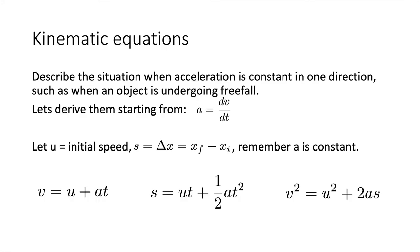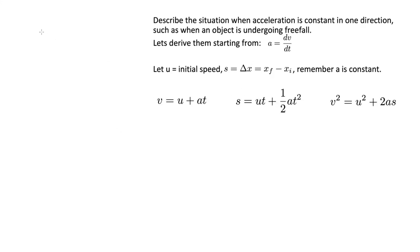The kinematic equations describe situations when the acceleration is constant in one direction, such as during freefall. We'll derive them starting from a = dv/dt. We let u stand for the initial velocity (v at t = 0), s for displacement (final minus initial position), and remember that a is constant.